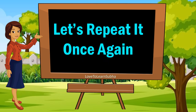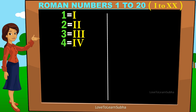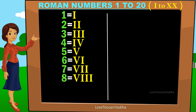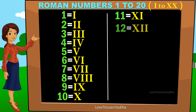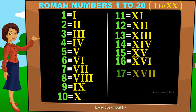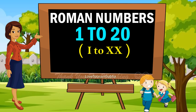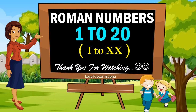Now let's repeat it once again. 1. 2. 3. 4. 5. 6. 7. 8. 9. 10. 11. 12. 13. 14. 15. 16. 17. 18. 19. 20. So I hope you enjoyed learning about Roman numbers for the Hindu Arabic numbers 1 to 20.